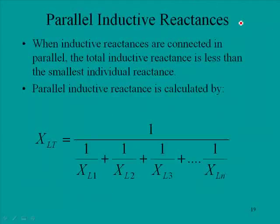Parallel inductive reactances. When inductive reactances are connected in parallel, the total inductive reactance is less than the smallest individual reactance. The parallel inductive reactance is calculated with this formula. If we change this to R, this would be the same formula we use with resistance.